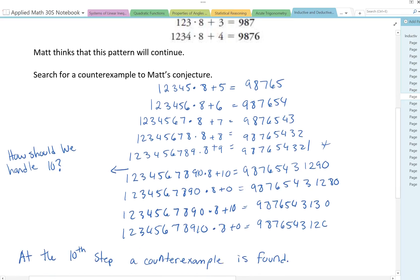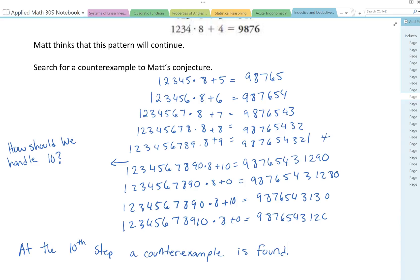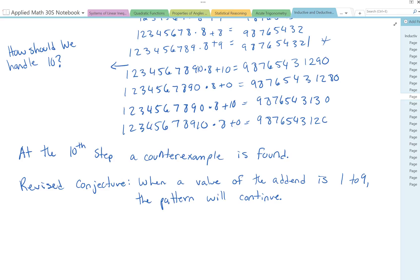So we can state that at the 10th step a counterexample is found. So let's try to write a new conjecture. So what would the new conjecture state in order to write what Matt thinks is happening? So we can just put in the stipulation that that's only from 1 to 9 that the pattern continues. And then once you get into double digits that doesn't happen anymore. So here's my revised conjecture. When a value of the addend, the number that we're adding, is 1 to 9, the pattern will continue.